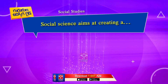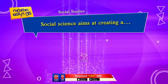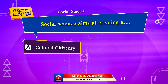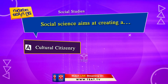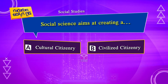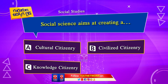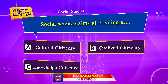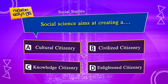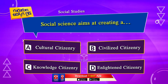Social Science aims at creating: Option A. Cultural Citizenry. Option B. Civilized Citizenry. Option C. Knowledge Citizenry. Option D. Enlightened Citizenry. Your time starts now.